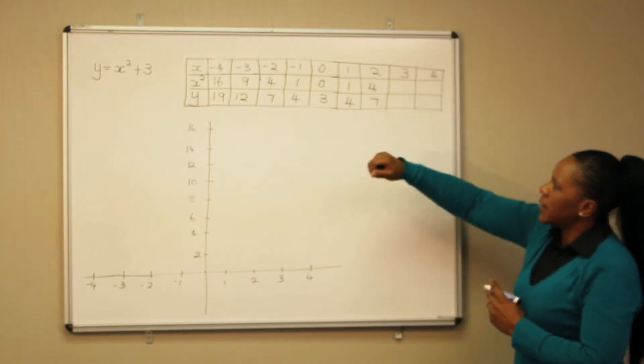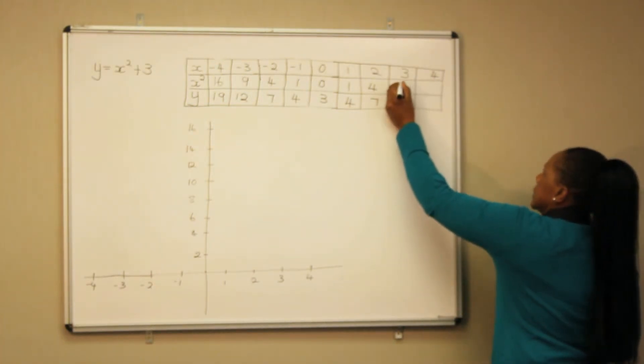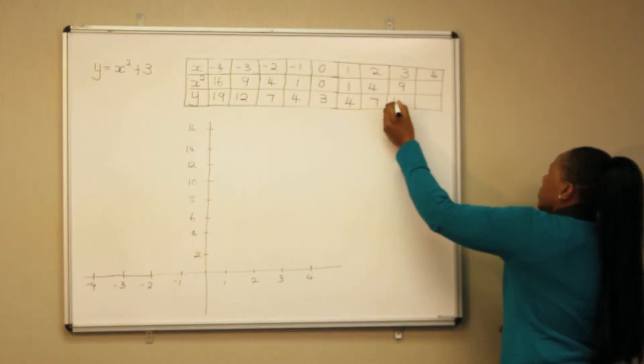2 squared is 4, plus 3 gives us 7. 3 squared is 9, and we get 12.